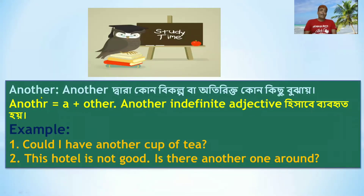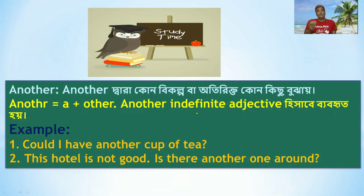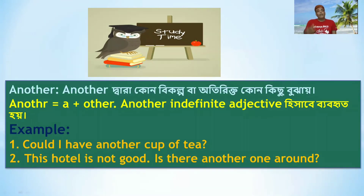Now, 'another.' Another is formed from 'a' plus 'other.' It is used when referring to one more of the same thing or a different one. For example: 'May I have another cup of tea?' — meaning one more cup.